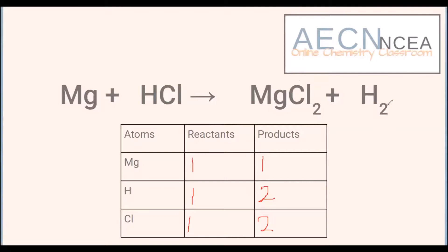Let's start with our hydrogens. We've got two on the product side but only one on the reactant side, so we need a second one — two in total. We have to put a two in front of the entire HCl compound. That gives us two hydrogens and also two chlorides. Now looking at our table: one magnesium, one magnesium; two hydrogens, two hydrogens; two chlorides, two chlorides. We are balanced.